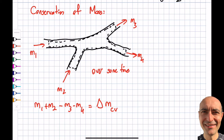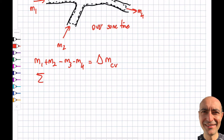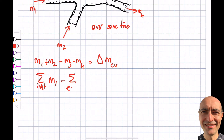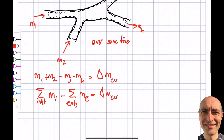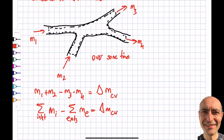We can write this more generally: instead of listing one, two, three, four, five inlets, I can use summation over all inlet masses minus summation over all exit masses, and that equals the delta m of my control volume. This is nice, but in reality I don't really deal with total masses.